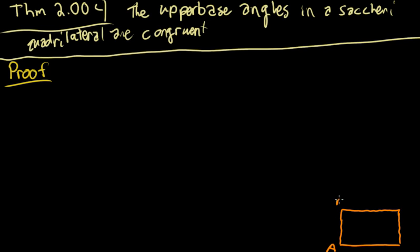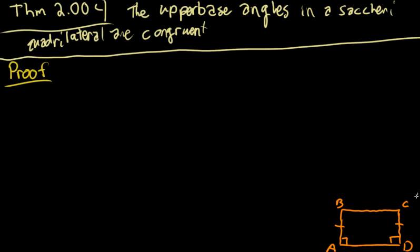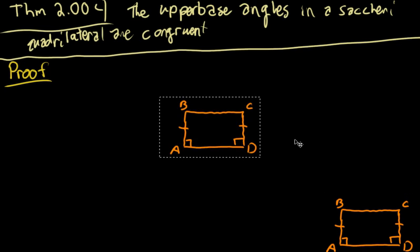And we'll label it A, B, C, D. And we have these two parts are congruent and these are right angles. And I need two of those, so I will create another one.